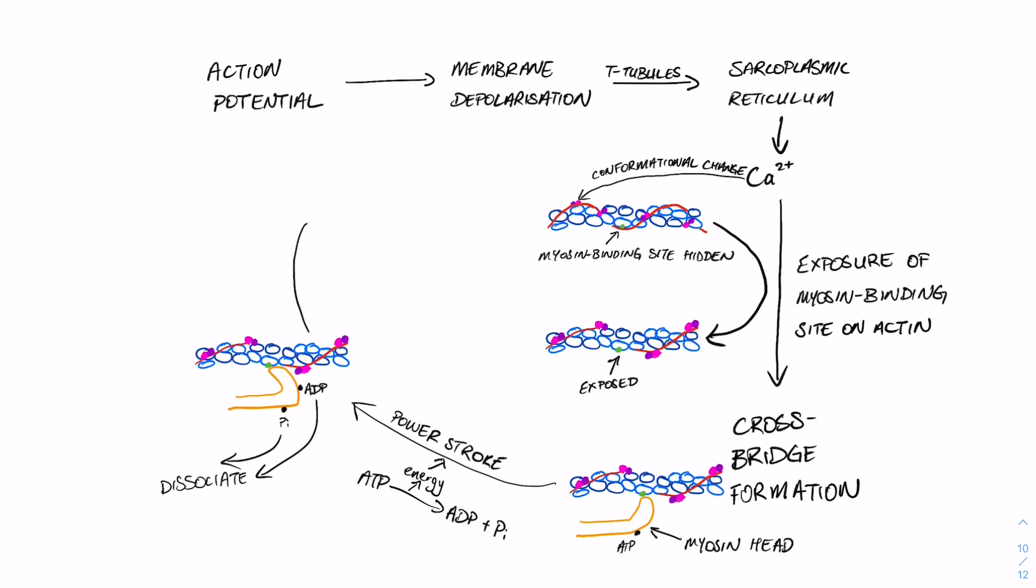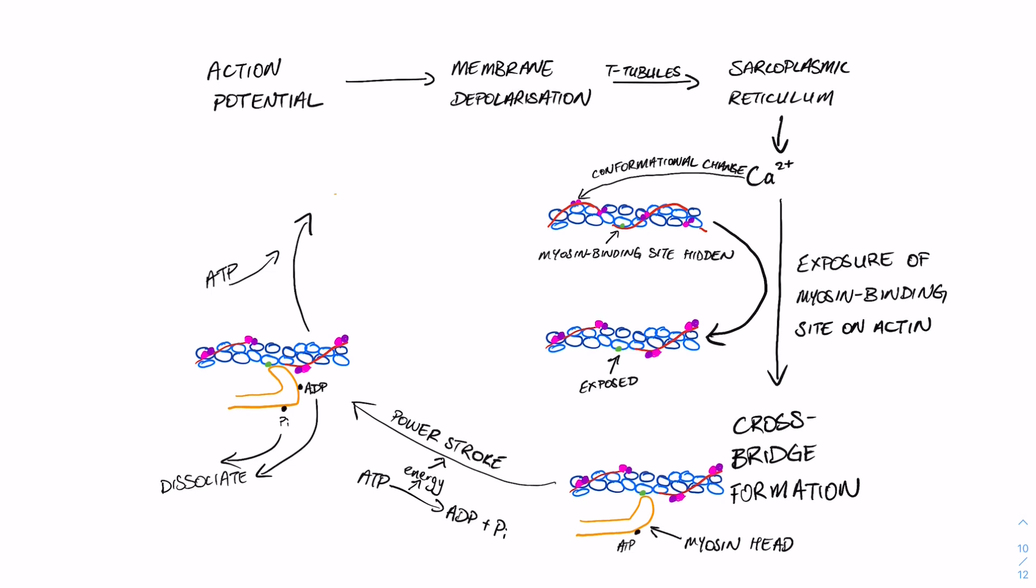Once that myosin head has pulled back, we are left with an ADP and an inorganic phosphate, which basically just dissociates off, and currently the cross bridge is still formed because actin is still bound to myosin, and now we kind of want to get rid of the cross bridge.